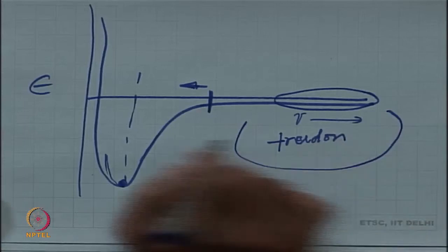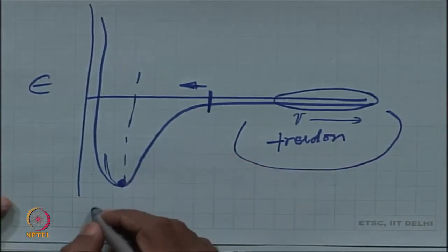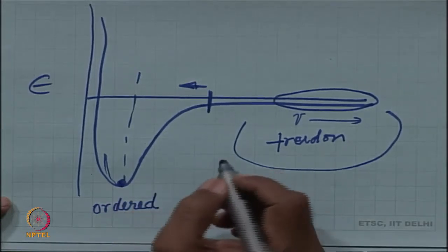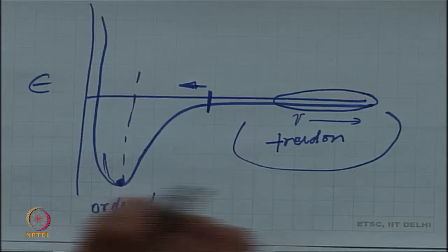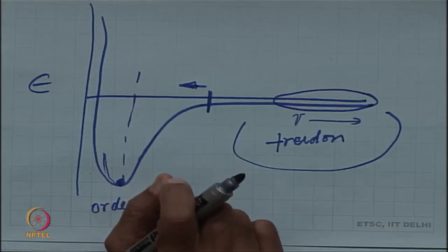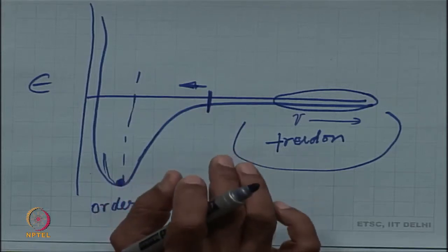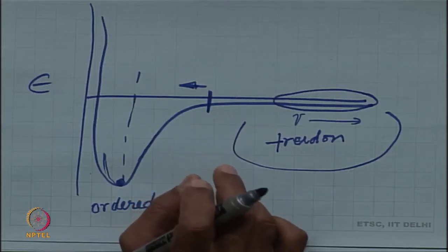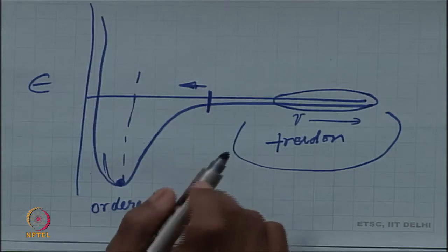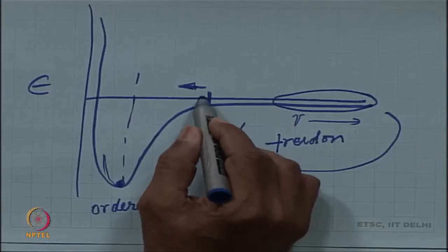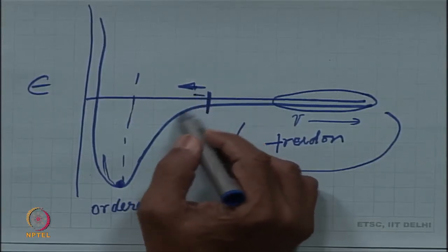This is a freedom region versus an ordered region. If you carry out a drawing process - pulling molecules and forcing them to come close - or any other mechanical, thermal, or chemical input, there is a possibility of atoms coming closer than the critical distance.